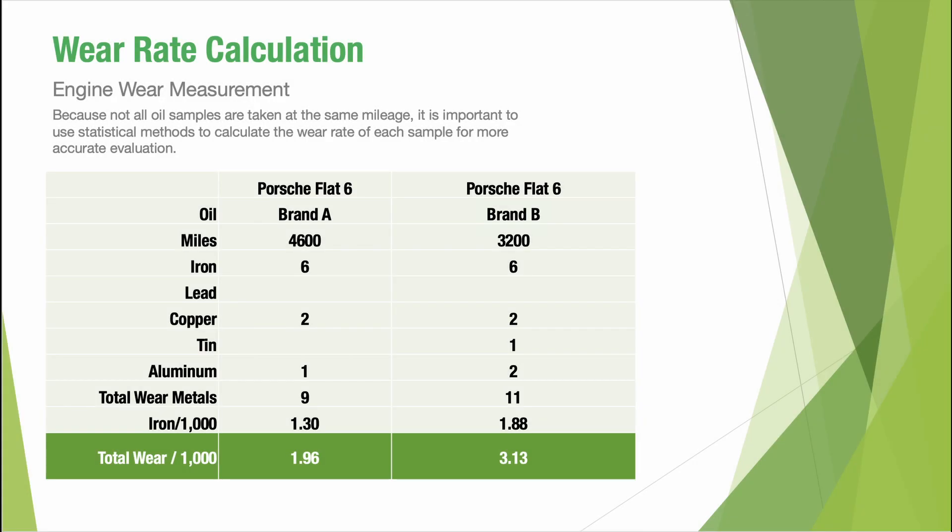Then you want to look at the total amount of wear per thousand miles. For street cars and track cars that see a lot of miles, this is how you normalize the wear metals to see what's going on — because the individual numbers tell you one thing, but the clearer picture is taking them as a whole and getting a wear rate. Looking at that wear rate over time through trend analysis is really going to be the key to knowing the health of your engine, so you can get the most longevity out of it.